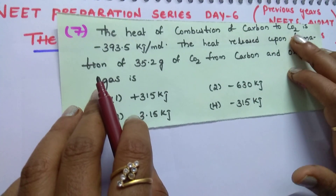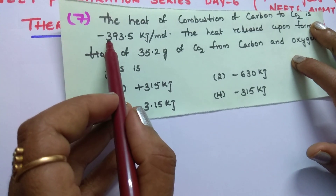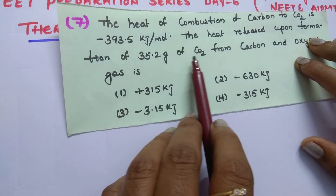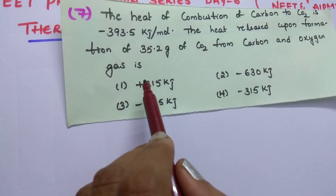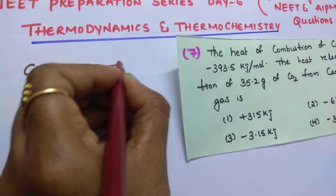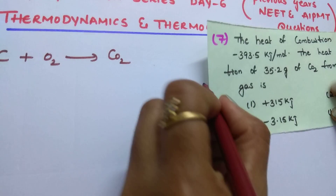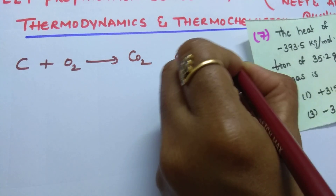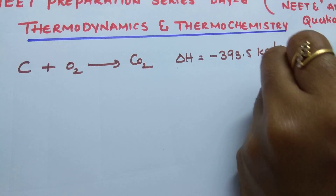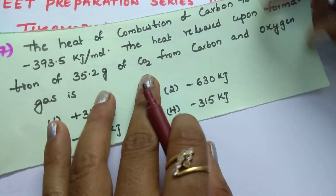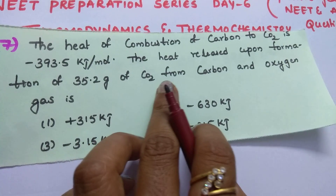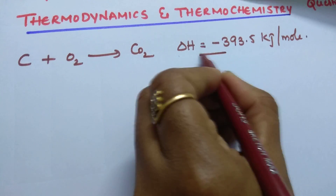The heat of combustion of carbon to carbon dioxide is given as minus 393.5 kilojoule per mole. The heat released upon the formation of 35.2 grams of CO2 from carbon and oxygen gases — meaning during the combustion of carbon to carbon dioxide — how much amount of energy is released? Delta H equals minus 393.5 kilojoules of energy is released for 1 mole.